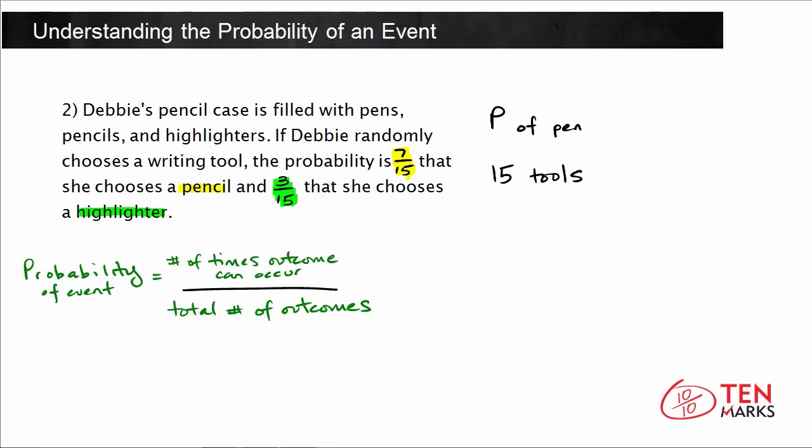So what we need to know is how many pens are there first? Because we can't calculate the probability without knowing the number of times that that event can occur. So how many pens are there? We need to use the probabilities of the other two events.